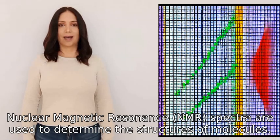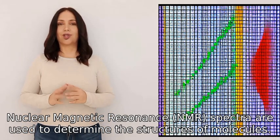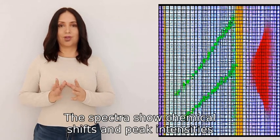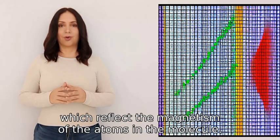Nuclear magnetic resonance (NMR) spectra are used to determine the structures of molecules. The spectra show chemical shifts and peak intensities, which reflect the magnetism of the atoms in the molecule.